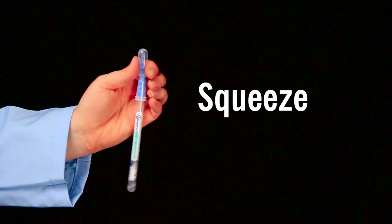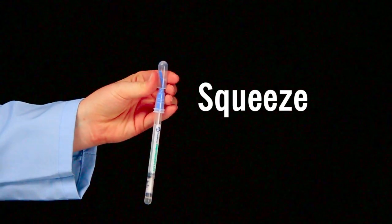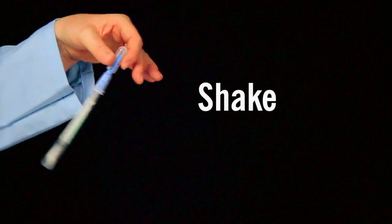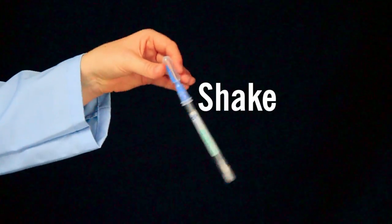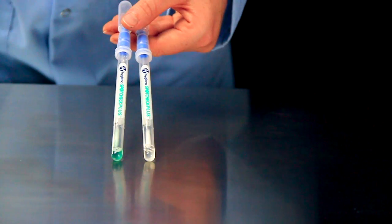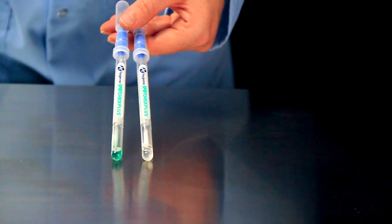Next, squeeze the bulb twice to expel liquid into the tube. Then shake for 5 seconds. Be sure to store SpotCheck Plus upright during the reaction time.